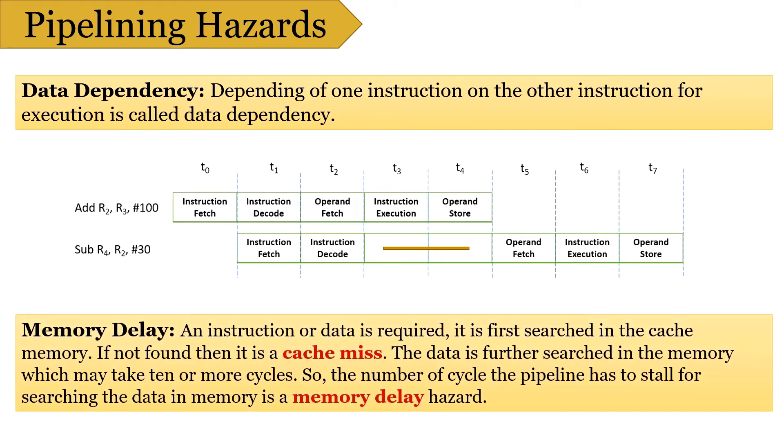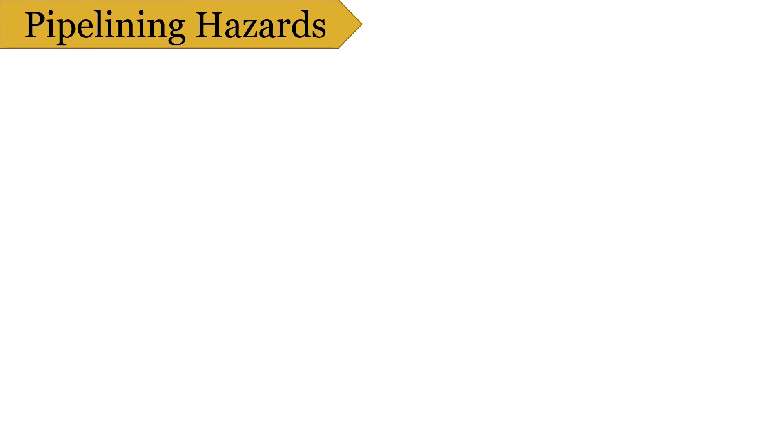The next is Memory Delay. When an instruction or data is required, it is first searched in the cache memory, and if it is not found there, it is a cache miss. The data is further searched in the memory, which may take 10 or more clock cycles. So, for that number of cycles, pipeline has to stall, and this is called Memory Delay Hazard. The cache miss also results in delay of all the subsequent instructions.